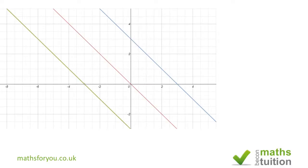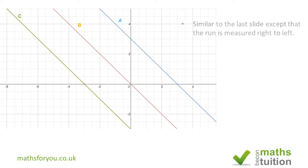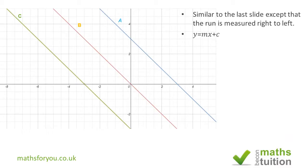On this next slide, the graphs are running north-west to south-east, rather than north-east to south-west as in the last slide. For all three graphs A, B, and C we still use the formula y = mx + c, and we still need to find m and c for each graph.